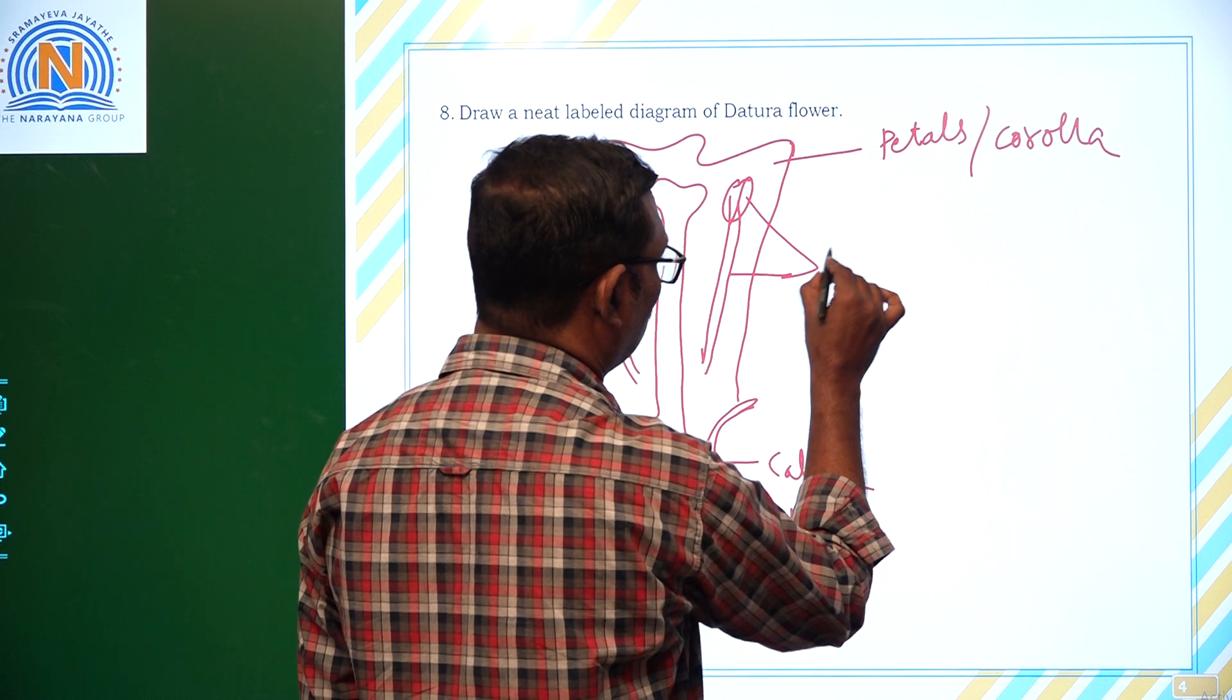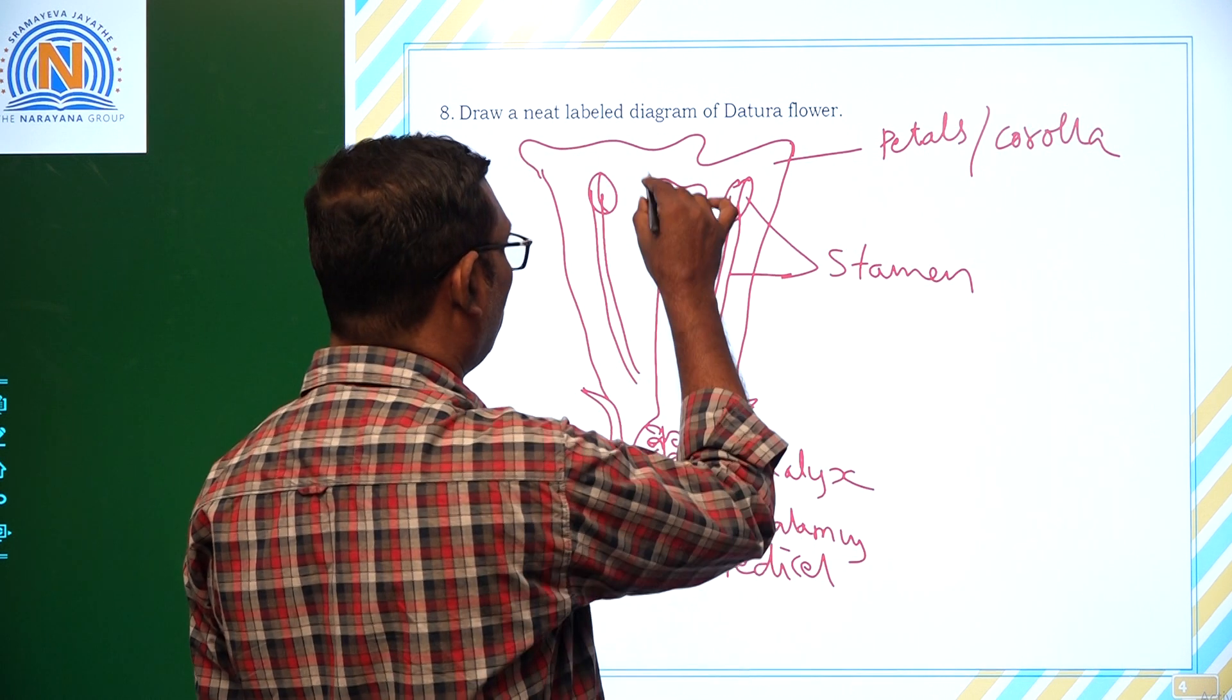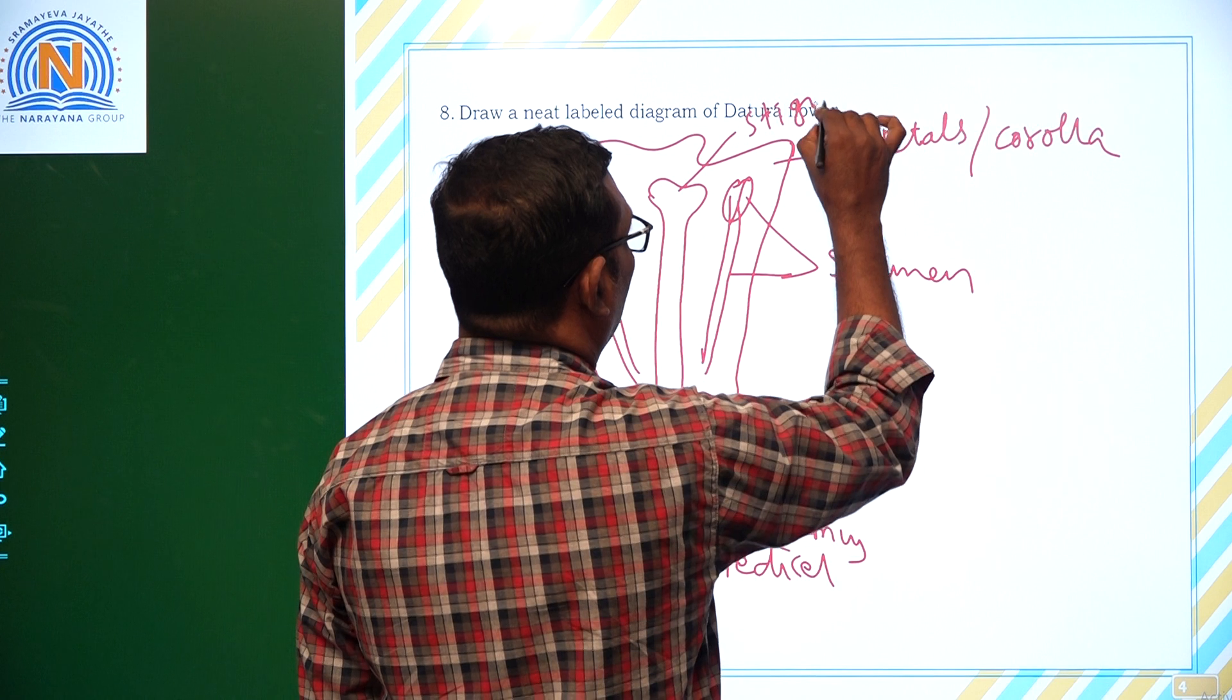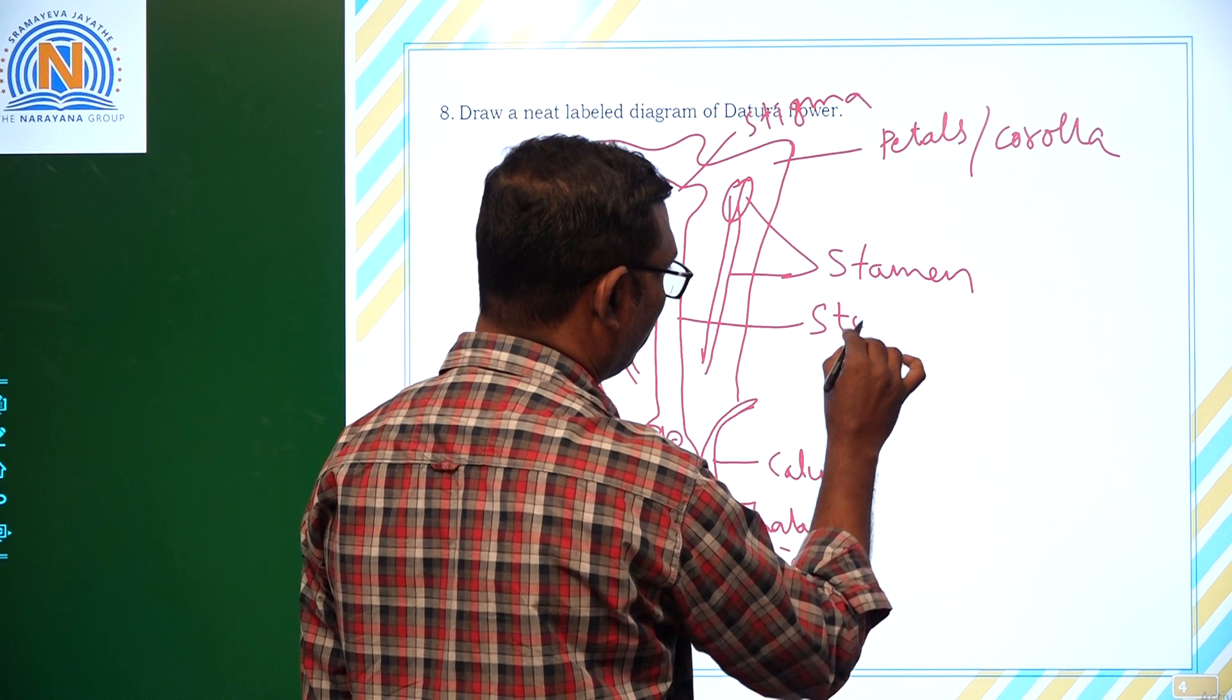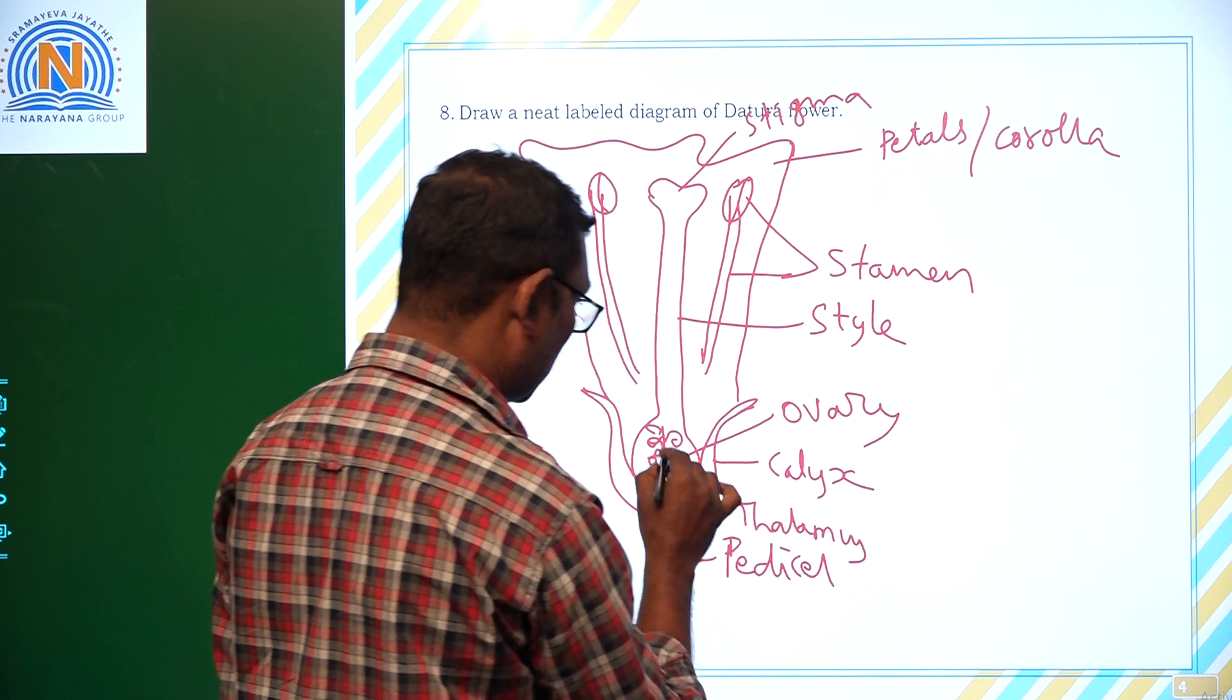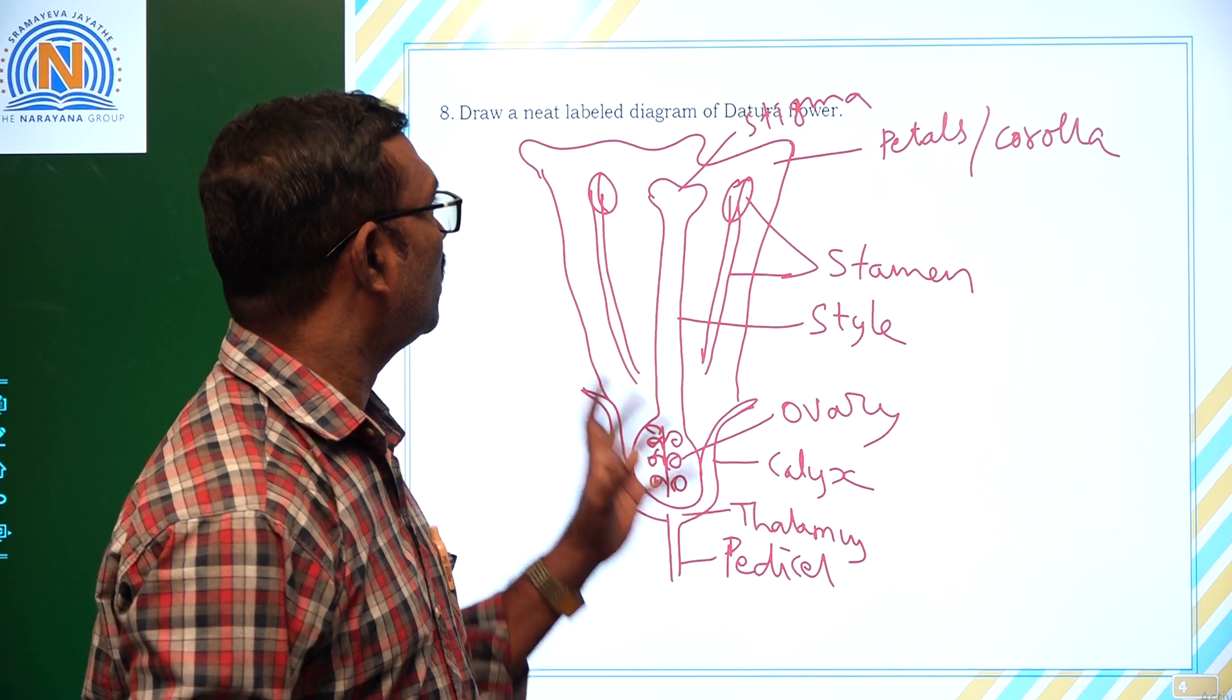And next coming to stamens, male reproductive parts. Anther and filament together called stamen. This one is a female part, female reproductive part. So this all together, this one is stigma, and this long tubular structure is style, and here ovule structure this is ovary. Inside the ovary there are ovules.